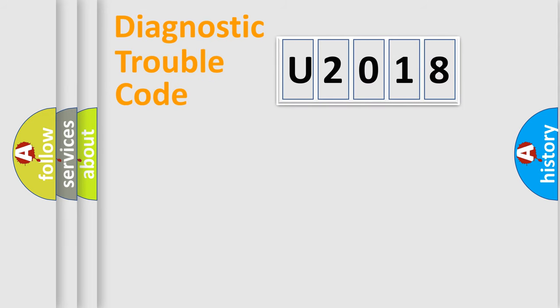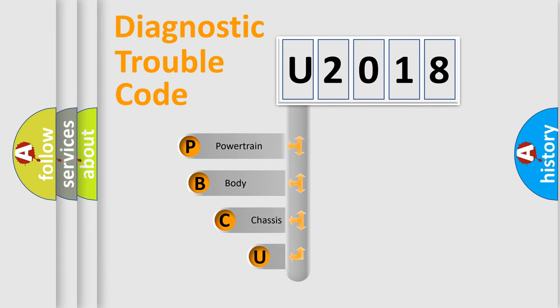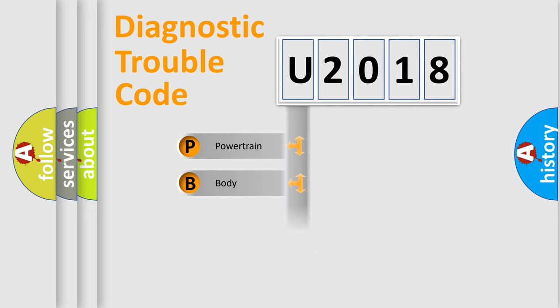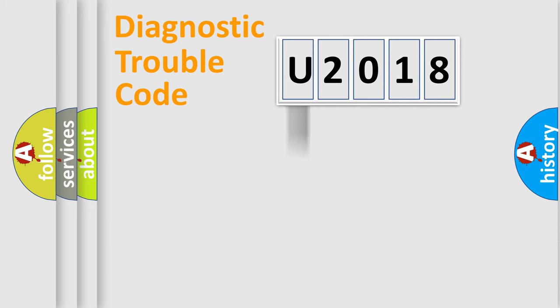Let's do this. First, let's look at the history of diagnostic fault code composition according to the OBD2 protocol, which is unified for all automakers since 2000. We divide the electric system of an automobile into four basic units: Powertrain, Body, Chassis, and Network.